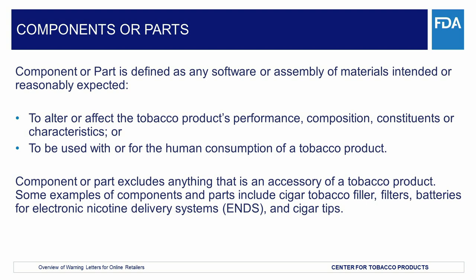The deeming rule defines accessory to mean any product that is intended or reasonably expected to affect or alter the performance, composition, constituents, or characteristics of a tobacco product; or solely controls moisture and/or temperature of a stored product, like a humidor; or solely provides an external heat source to initiate but not maintain combustion of a tobacco product, like a lighter.